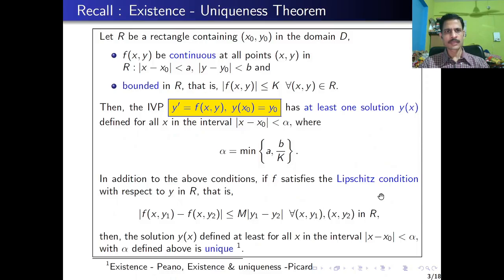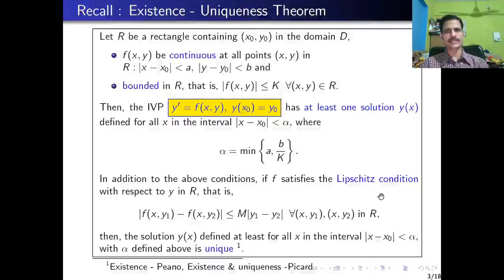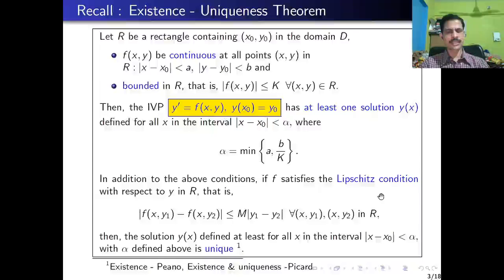We recall the existence-uniqueness theorem for the first-order ODE initial value problem. Consider y' = f(x, y) with initial condition y(x₀) = y₀. Let R be a rectangle containing the point (x₀, y₀) in the domain D. Let f be continuous at all points (x, y) in the rectangle described by |x - x₀| < a and |y - y₀| < b, and let f be bounded in R — that is, there exists some k such that |f(x, y)| ≤ k for all (x, y) in the rectangle.